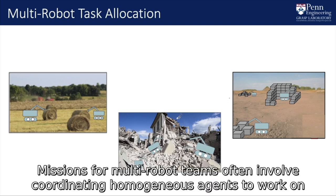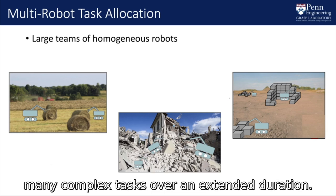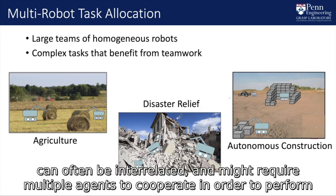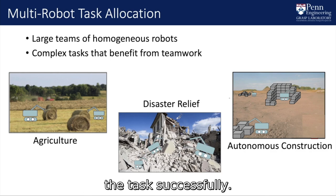Missions for multi-robot teams often involve coordinating homogeneous agents to work on many complex tasks over an extended duration. In applications such as agriculture, disaster relief, or autonomous construction, tasks can often be interrelated and might require multiple agents to cooperate in order to perform the task successfully.